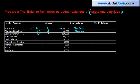Bank overdraft — an overdraft taken from a bank is a liability. Why? Because when you take an overdraft from a bank, you have to pay it back to the bank. So it's a liability, and a liability has a credit balance.